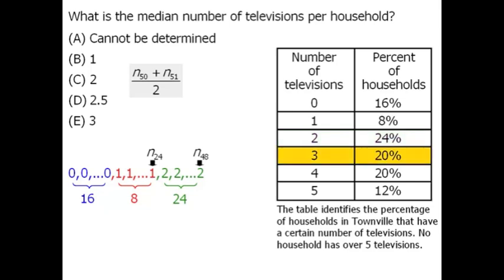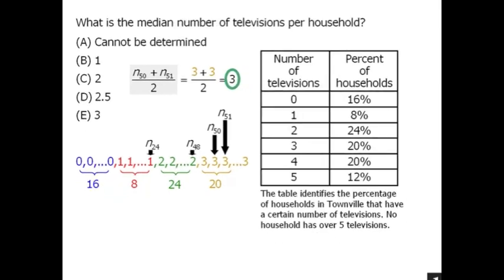And next, we're told 20% of the households have three televisions. In other words, 20 households have three televisions. So we'll list our 3s here. And at this point, we can see that number 50 and number 51 are both equal to 3. So we'll plug this into our little formula here. And we see that our median equals 3, in which case our answer is E.